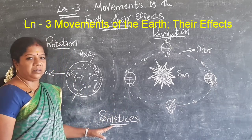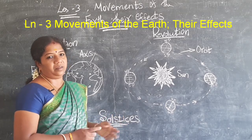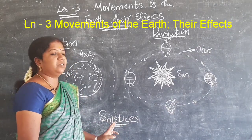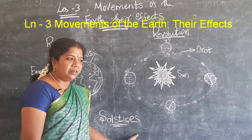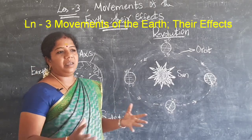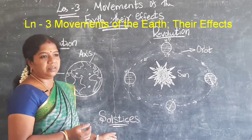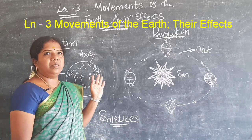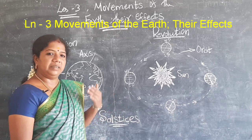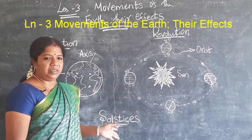Now let's come to solstices. Twice in a year, the sun stands directly overhead on the tropic. We call this a solstice. Sol means sun, so solstice means the sun is still standing. In the summer solstice, the days in the northern hemisphere are very long — this occurs around the month of June. In the winter solstice, which may be around December, the days are very short.